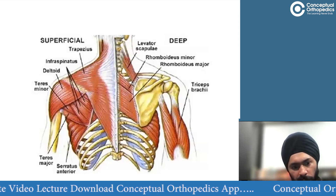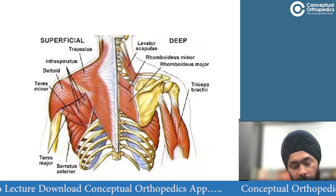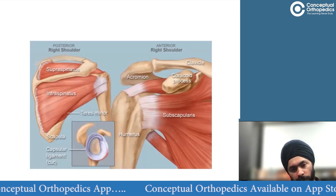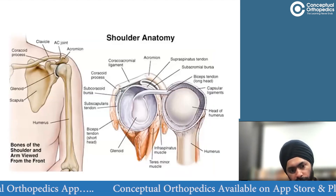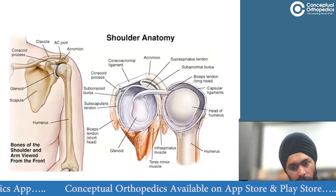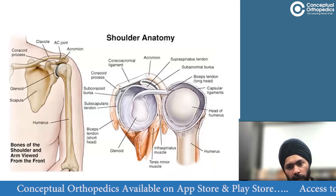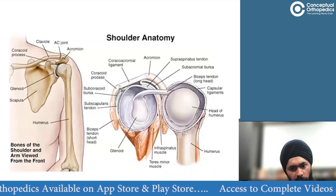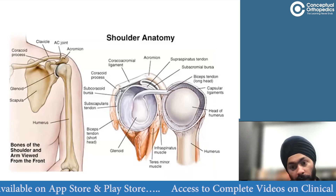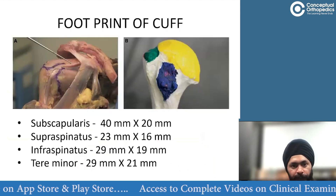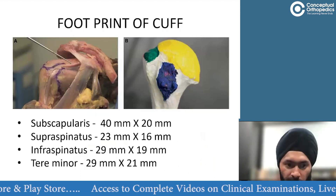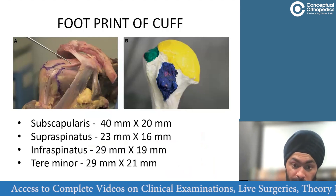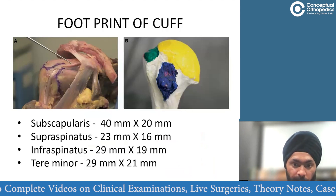The scapular group includes levator scapulae, rhomboids, serratus — a very important group. When going into shoulder arthroscopy or any shoulder surgery, you should know the dynamic and static structures around it, all the ligaments, the glenohumeral ligaments, the intra-articular portion of the biceps tendon, and the footprint of the rotator cuff. The biggest cuff muscle is actually your subscapularis — its footprint is about 40 mm by 20 mm.